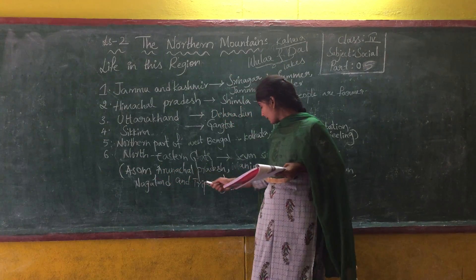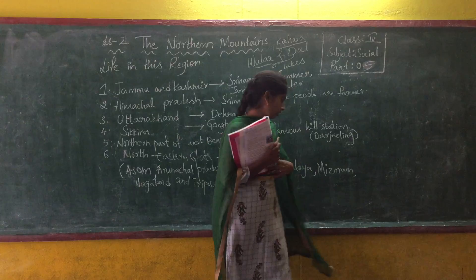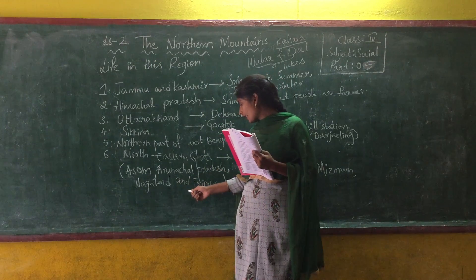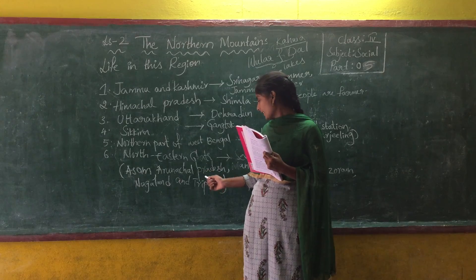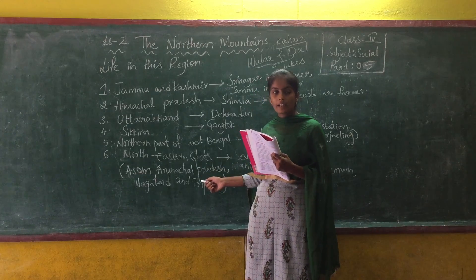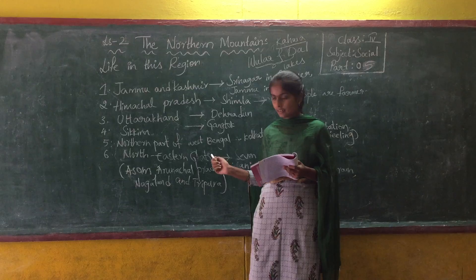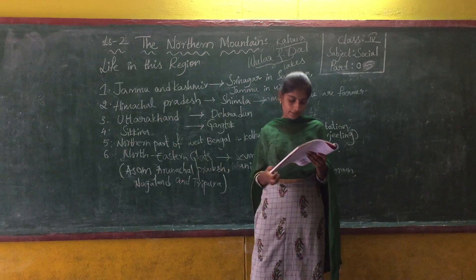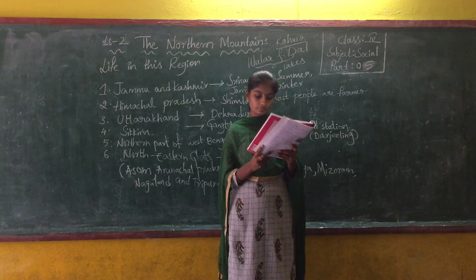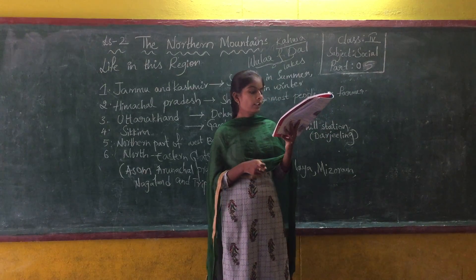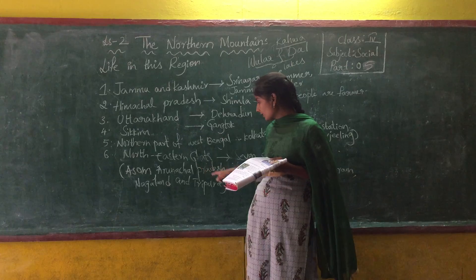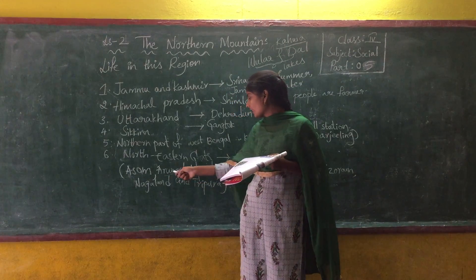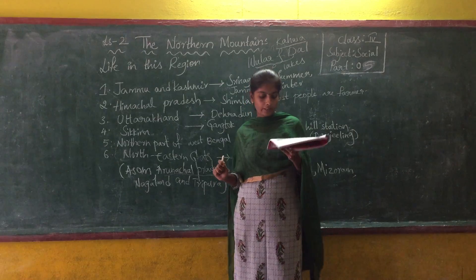The Seven Sisters are: Arunachal Pradesh, Manipur, Meghalaya, Mizoram, Nagaland, and Tripura — seven states located in the North Eastern region. The largest among the Seven Sisters is Arunachal Pradesh.